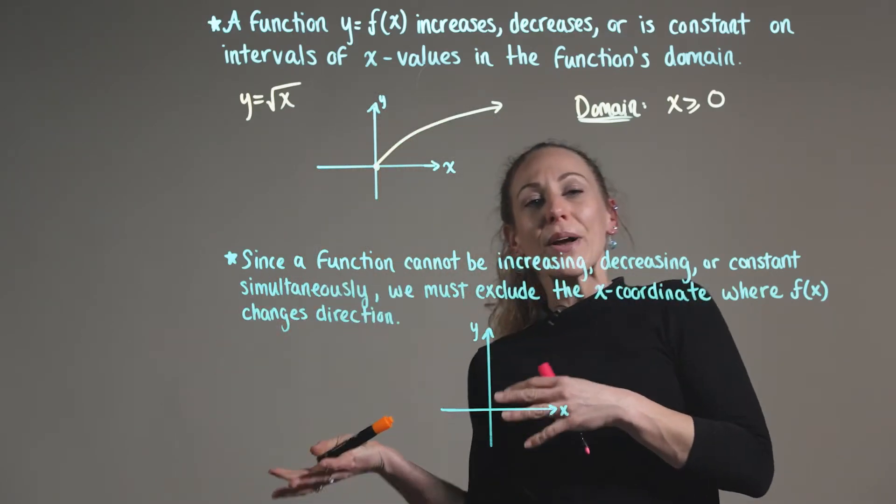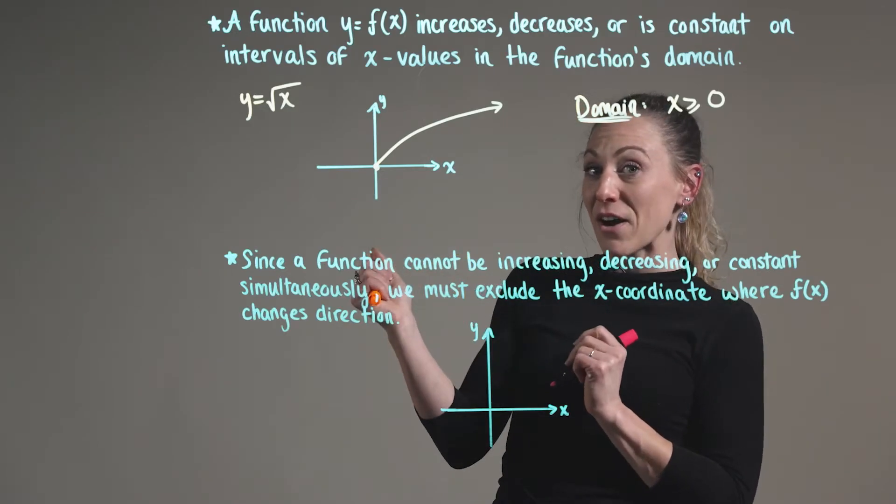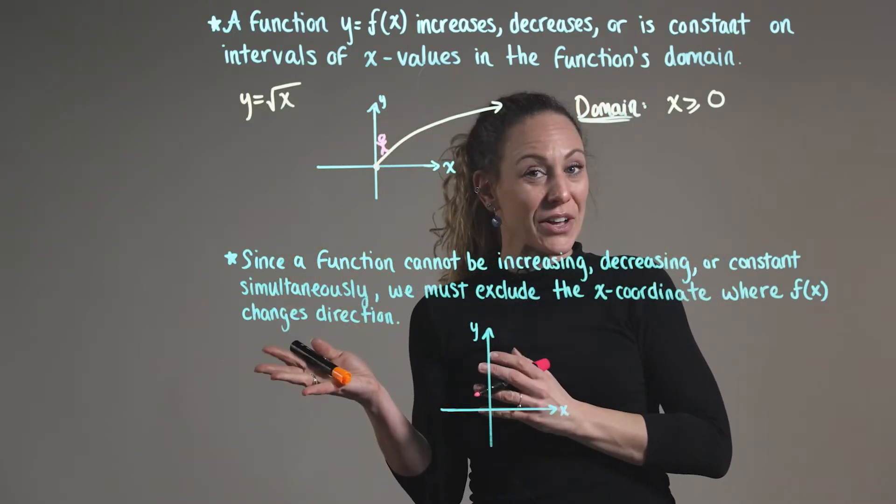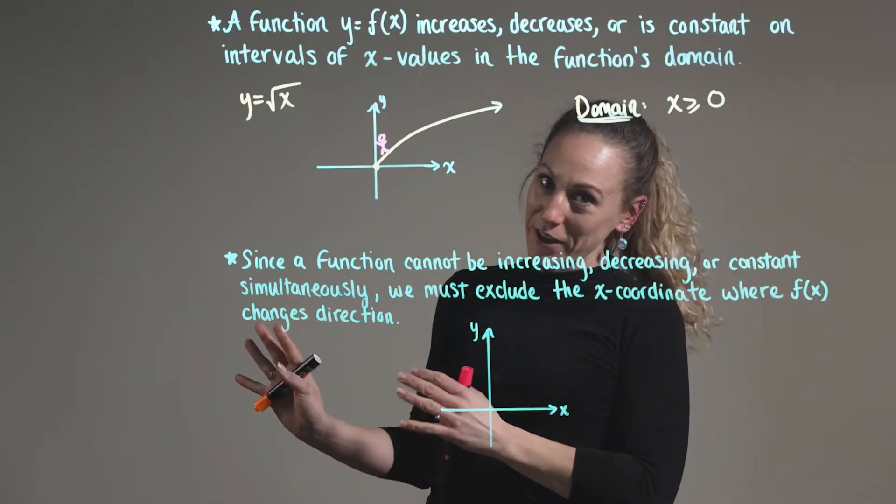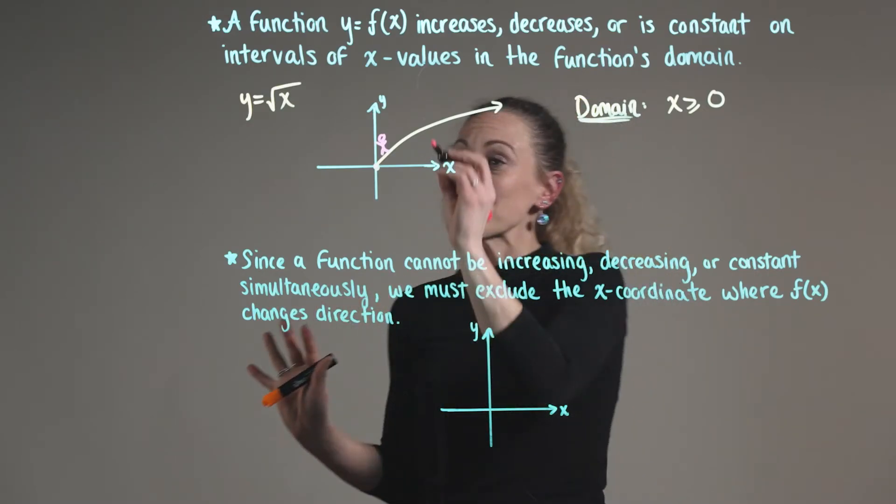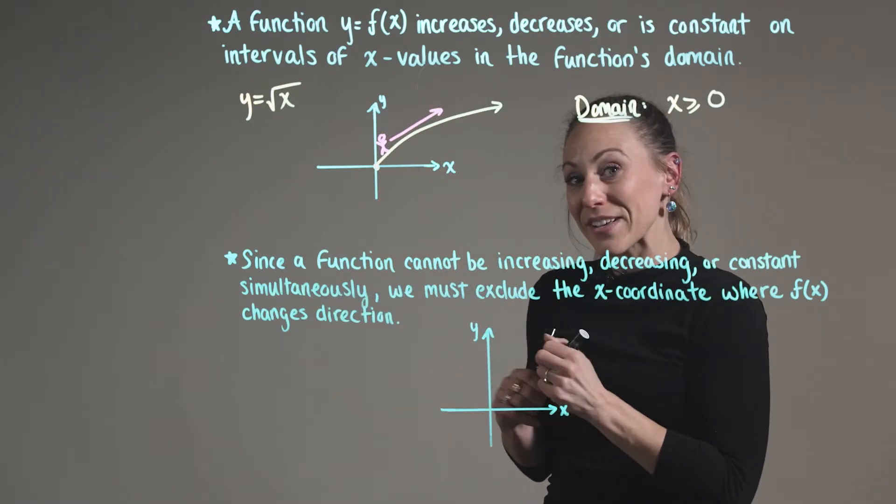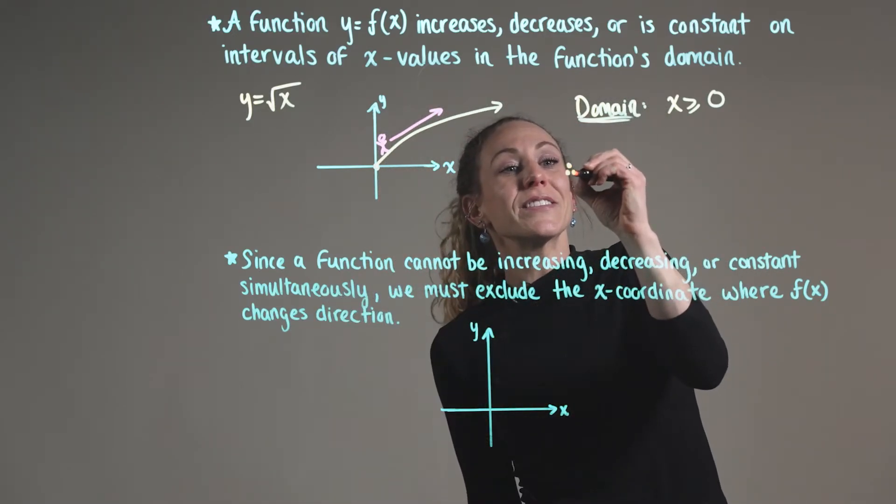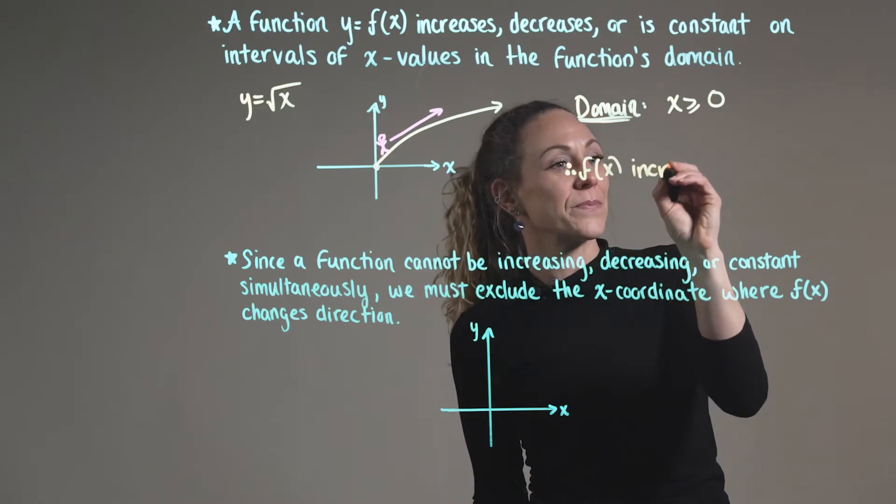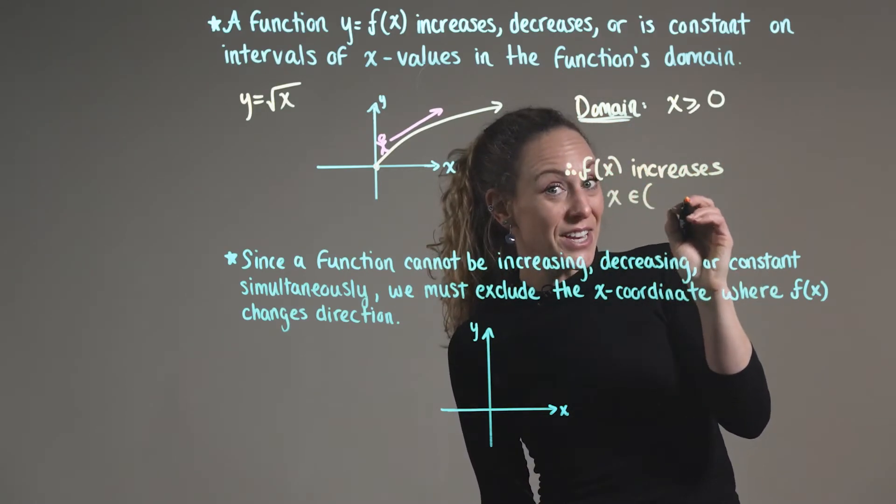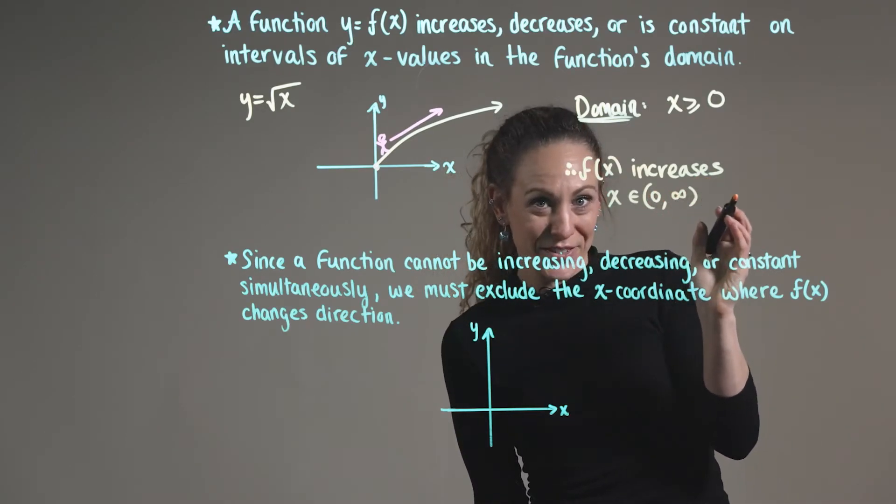Now, in order to see where this function is increasing, decreasing, or constant, I like to imagine myself standing on the graph. And you want to ask yourself, are we climbing up the mountain? Are we skiing down the mountain? Or are we walking on the beach? So in this case, we can pretty clearly see that we are climbing up the mountain. So we can conclude that our function f of x is increasing on the entirety of its domain, and this is increasing where x is an element of the open interval from zero to positive infinity.